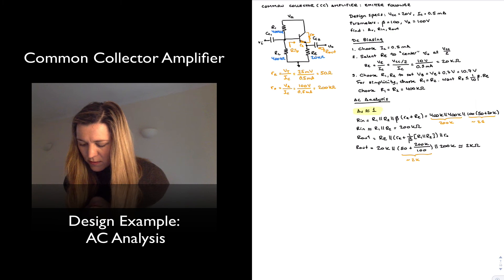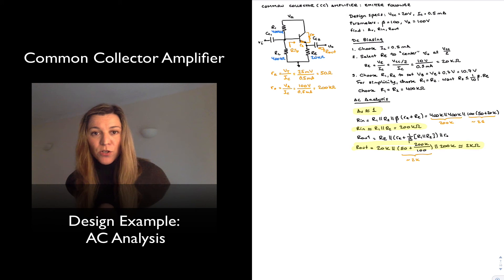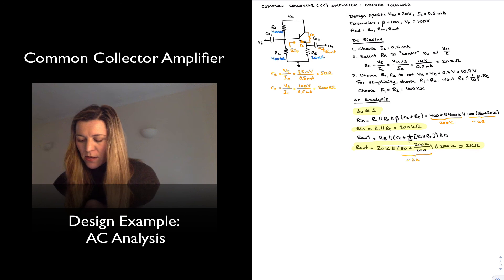So we have a gain of 1, an input resistance of roughly 200k, and an output resistance of roughly 2k. Notice that for similar characteristics to the common emitter amplifier that we previously designed, the common collector amplifier or emitter follower has an input resistance that is 10 times larger than the one we have found for the common emitter. The one for the common emitter was 20k, this is 200k, so larger by an order of magnitude. And the output resistance in the common emitter amplifier was also 20k, remember it was equal to RC, whereas in this case 2k. So we have improved our output resistance or decreased our output resistance also by a factor of 10.